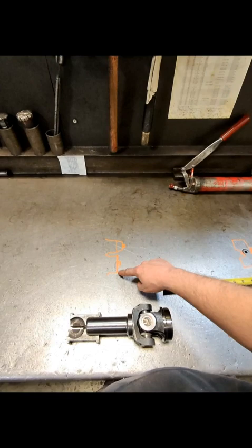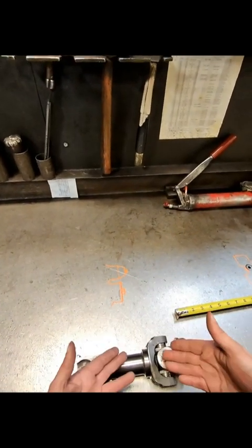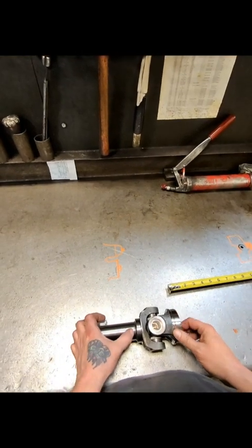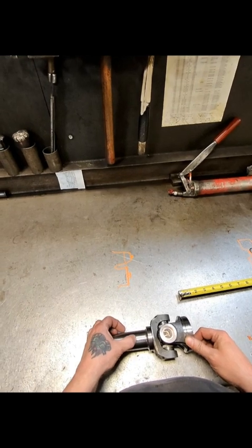So here's an example. This is our flush seal. This is a booted seal. With this slip yoke here, typically we will have this seal riding at three quarters of an inch to an inch.